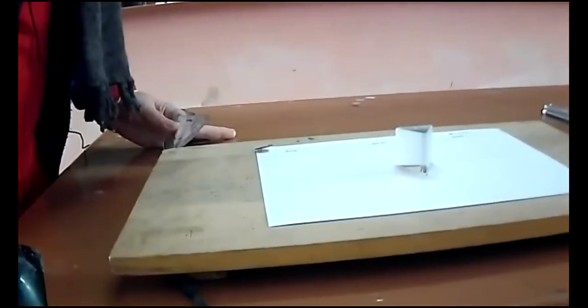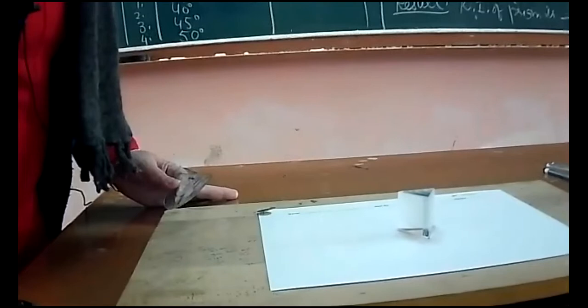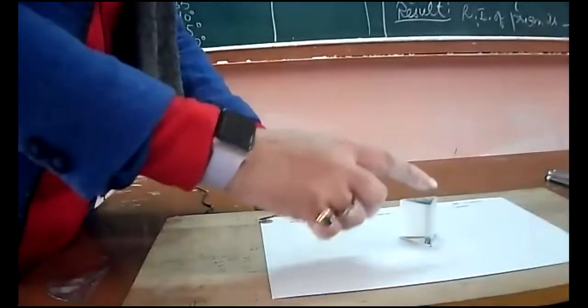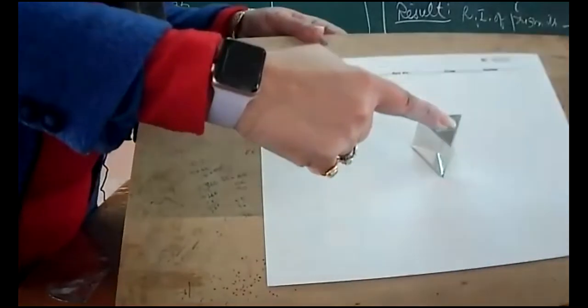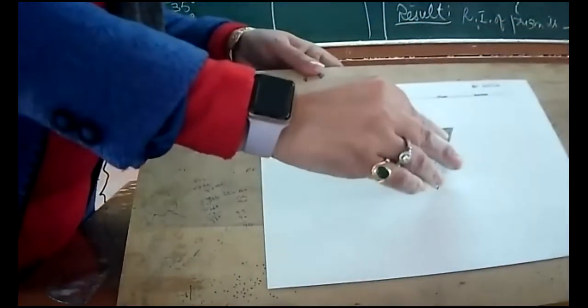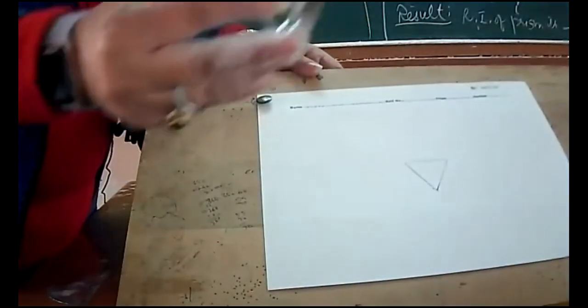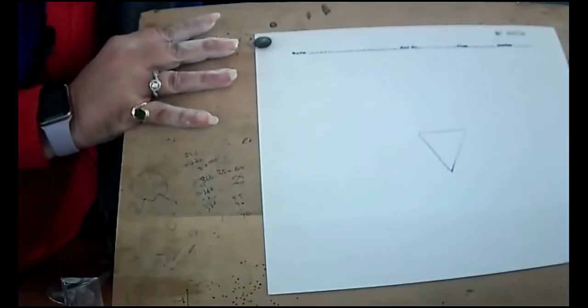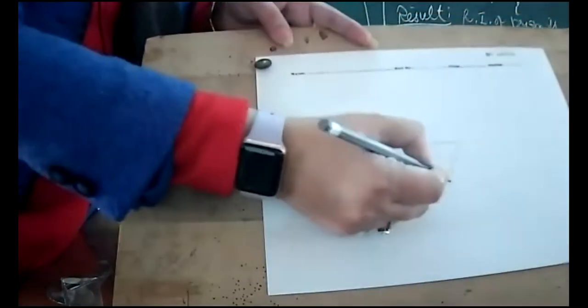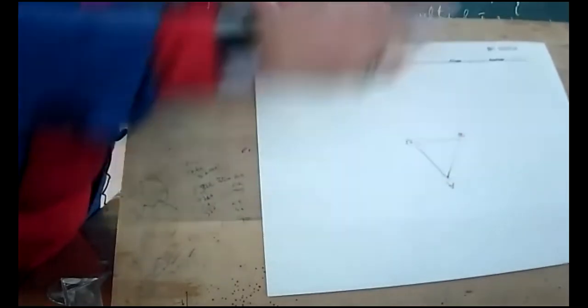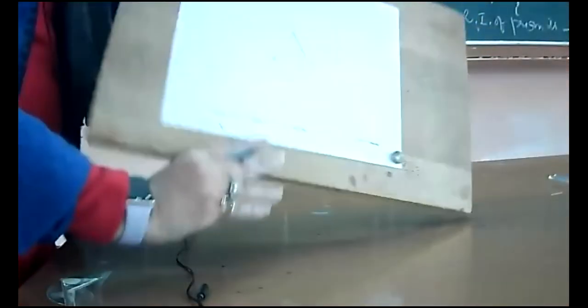Now let me do this practically. This is the prism. I have fixed the sheet and drawn the outline of prism. Now I am going to mark incident ray and normal here. This is A, B, and C points.